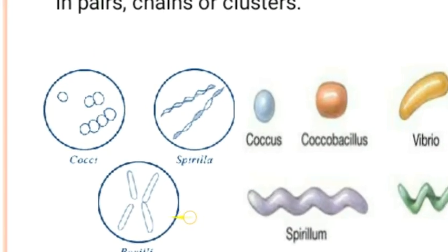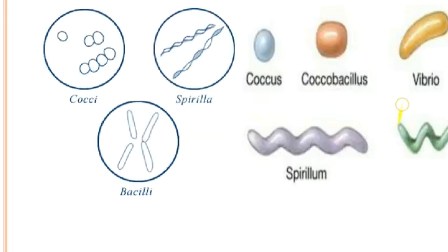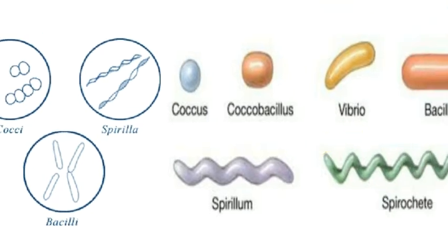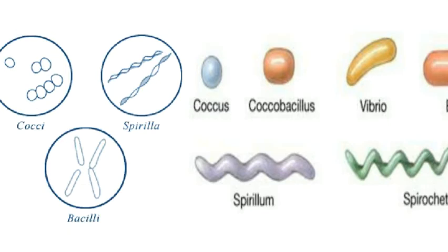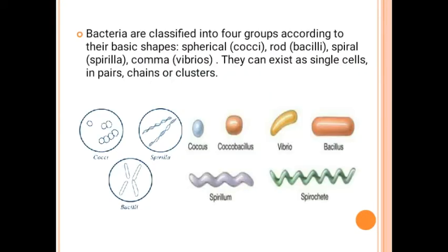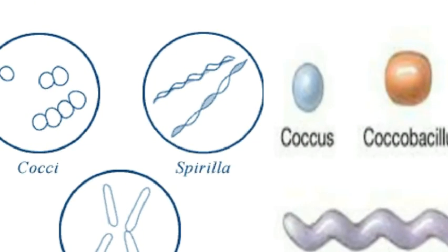You can see in this picture: cocci are spherical-shaped bacteria; spirilla are spiral-shaped; bacilli are rod-shaped, like a stick; and vibrio is comma-shaped. So the four shapes are: cocci (spherical), bacilli (rod-shaped), spirilla (spiral), and vibrio (comma-shaped).